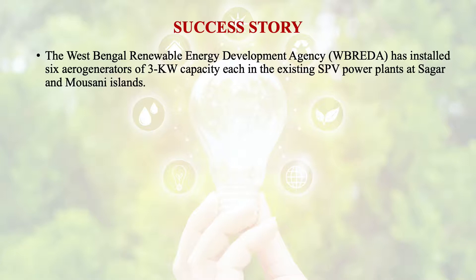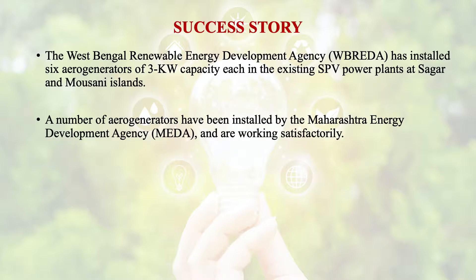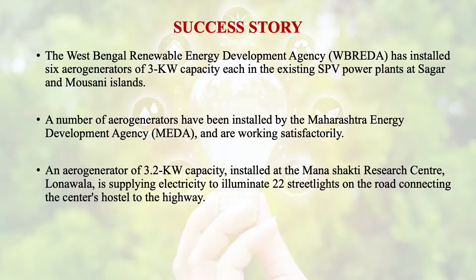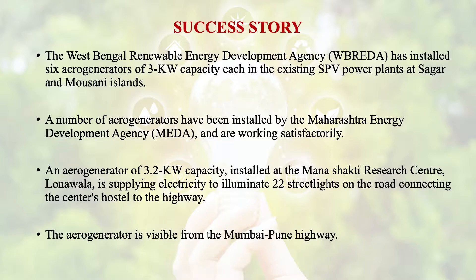There are success stories of aerogenerators in India. The West Bengal Renewable Energy Development Agency has installed six aerogenerators of 3 kilowatt capacity each in the existing solar photovoltaic power plants at Sagar and Mohsani Islands. A number of aerogenerators have been installed by the Maharashtra Energy Development Agency and are working successfully. An aerogenerator of 3.2 kilowatt capacity is installed at Manashakti Research Centre, Lonawala, and the electricity supplied by this aerogenerator illuminates 22 street lights on the road connecting the centre's hostel to the highway, visible from the Mumbai-Pune Highway.